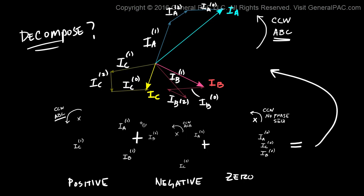So what we're saying here is that we can take any unbalanced set and we can derive the positive sequence component, the negative sequence component, and the zero sequence component.